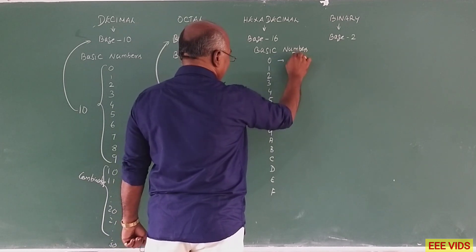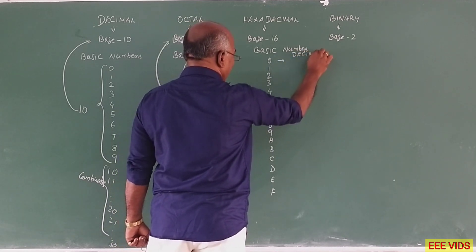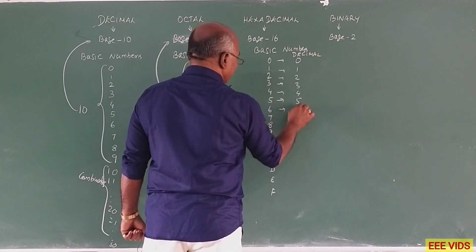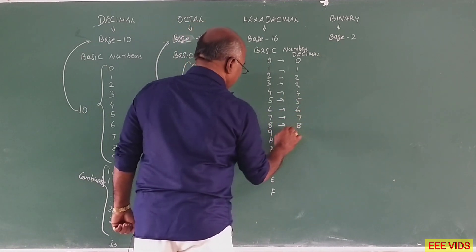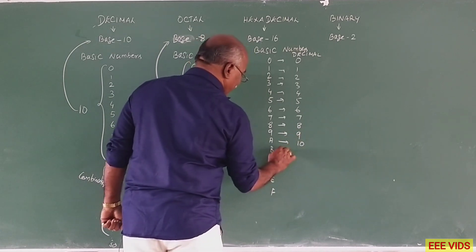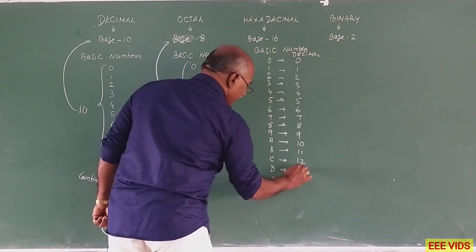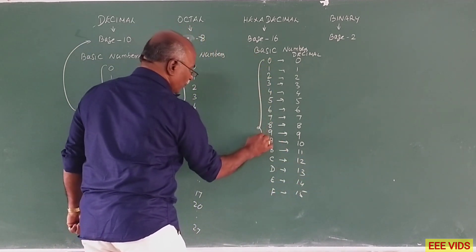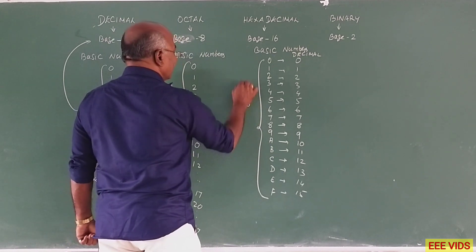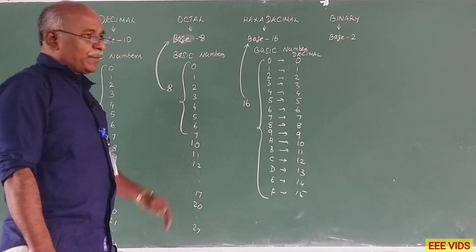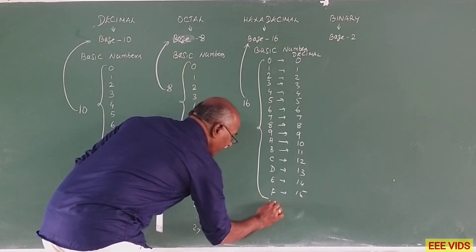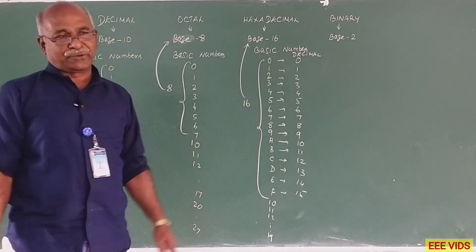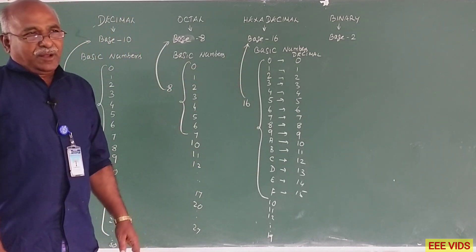The equivalent decimal numbers in hexadecimal are: 0=0, 1=1, 2=2, 3=3, 4=4, 5=5, 6=6, 7=7, 8=8, 9=9, A=10, B=11, C=12, D=13, E=14, F=15. So the basic numbers are 0 to 9 and A to F, totaling 16 numbers — that is why it is called base 16. After F, the combination continues as 10, 11, 12, up to 19, then 1A, 1B, and so on.